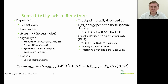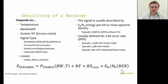One of the questions we get asked is how sensitive is a receiver, and this is one of those questions where there's no single answer. It's affected by a number of effects such as temperature, bandwidth, system noise figure, the signal type, its modulation, its error correction, encoding techniques and code gains, as well as losses, filters, switches, antennas and so on.